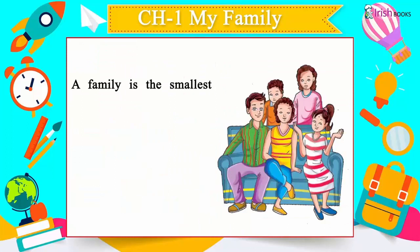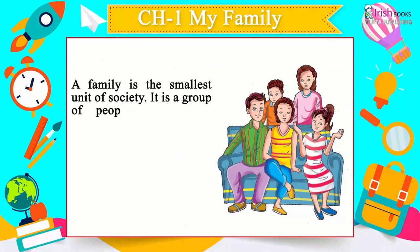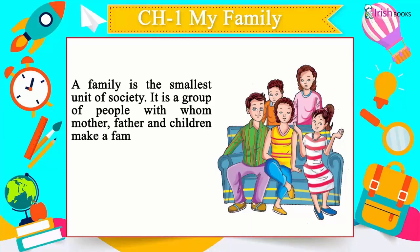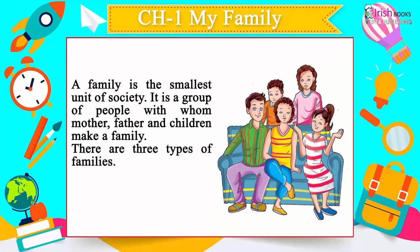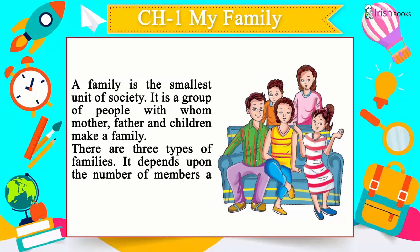A family is the smallest unit of society. It is a group of people — mother, father and children make a family. There are three types of families, depending upon the number of members a family has.